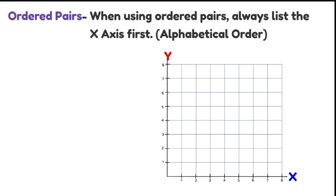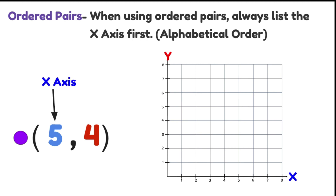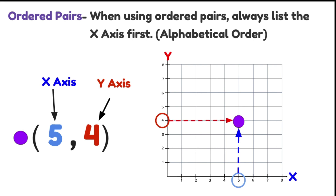Let's take a closer look at this. Remembering our x-axis is always first — it's in alphabetical order, x comes before y. Here are our coordinates: 5, 4. The 5 is our x-axis and we need to find that first on our number line. The y-axis is number 4. So we find 5 on our x-axis and 4 on our y-axis. The point where these two meet is where we put our dot, using ordered pairs to find a location on this coordinate grid.